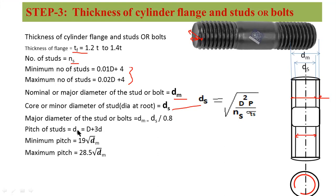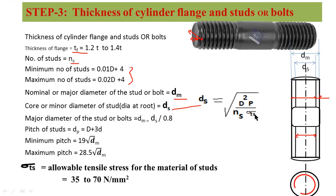The pitch circle diameter of studs equals capital D plus three. The minimum pitch required is 2.5√dm and maximum pitch is 28.5√dm. dm equals ds divided by 0.8. If the value of σts is not given in the problem, you can choose a value between 35 to 70 megapascals for the stud material.